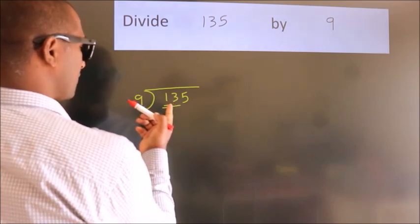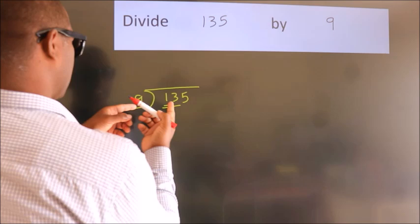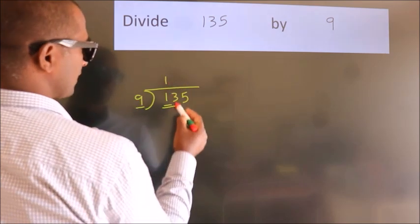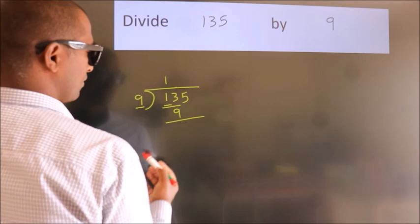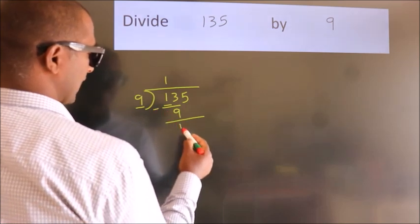A number close to 13 in the 9 table is 9 once 9. Now we should subtract. We get 4.